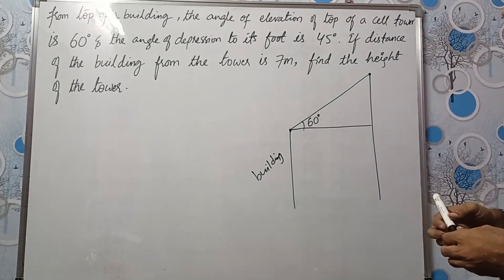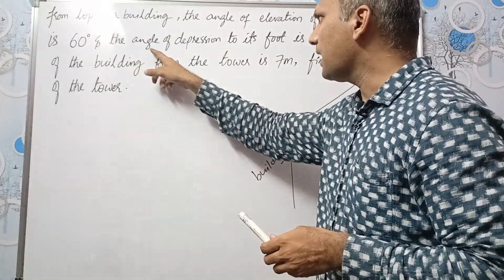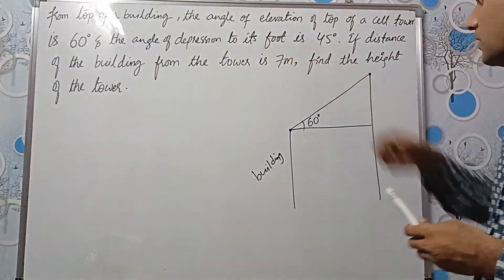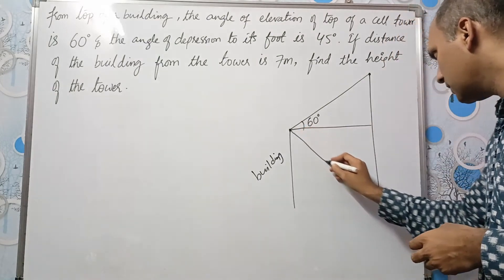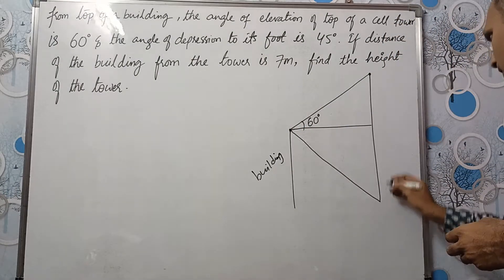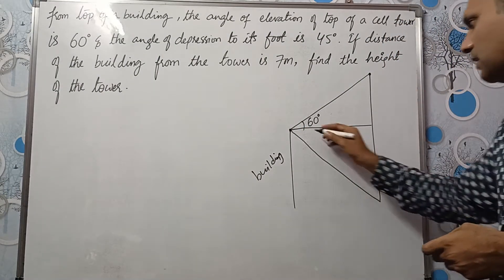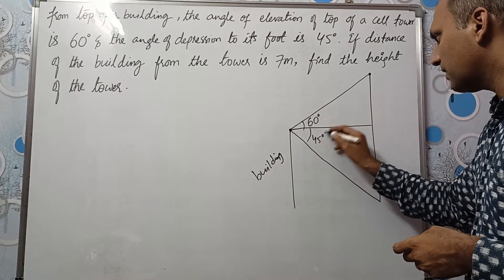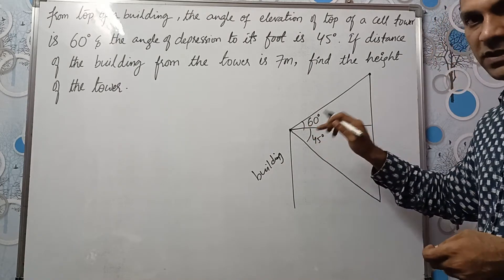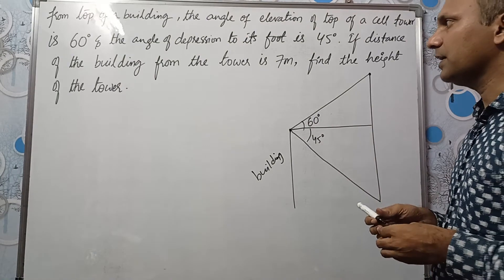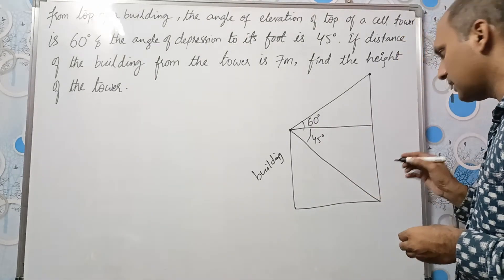And angle of elevation is how much? 60 degrees. And the angle of depression to its foot is 45. From the same point, you are seeing the foot of this tower. Angle of depression is 45. Angle of elevation or depression is measured with respect to horizontal line. And this is the ground.